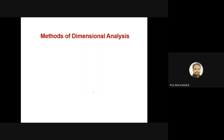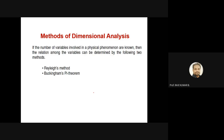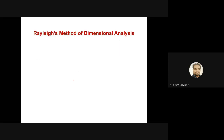There are two methods of dimensional analysis: one is called the Rayleigh method and the other is called the Buckingham Pi theorem. In most cases, the Buckingham Pi theorem is followed because it is the simplest way of relating different kinds of variables. If the number of variables involved in a physical phenomenon are known, the relation among the variables can be determined by either of these two methods.